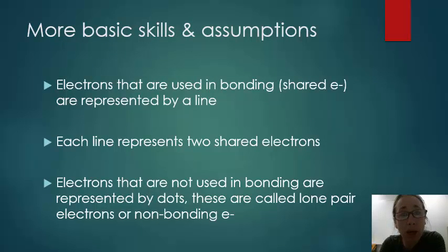Electrons that are used in bonding, or shared electrons, are represented by a line, and each line represents two shared electrons. So in a Lewis dot structure, we'll be drawing a line between two atoms, which are represented by their symbol, and that line represents two shared electrons, which is the covalent bond. Electrons that are not used in bonding are represented by dots, and these are called lone pair electrons, and sometimes non-bonding electrons.